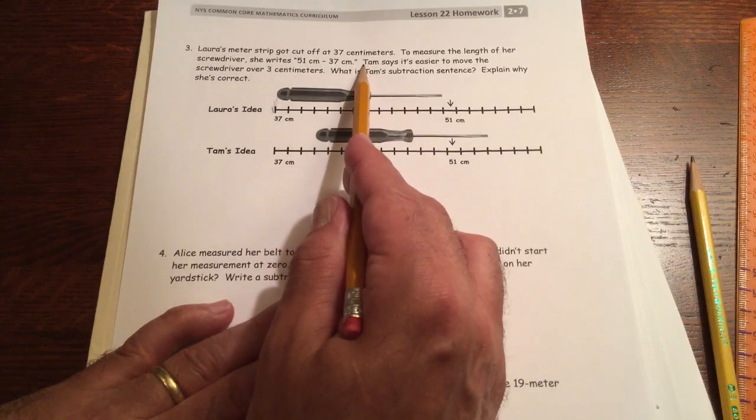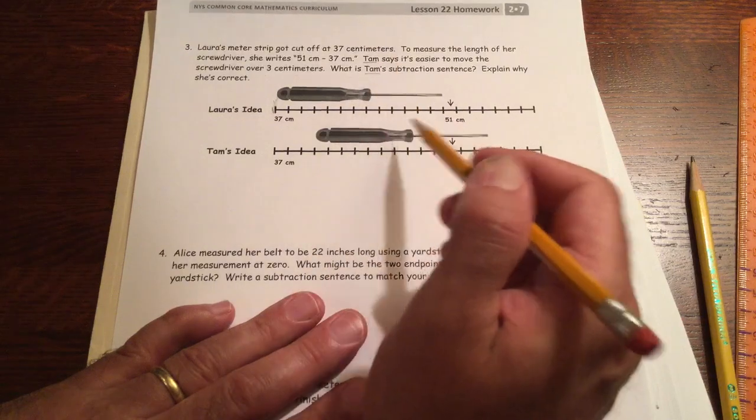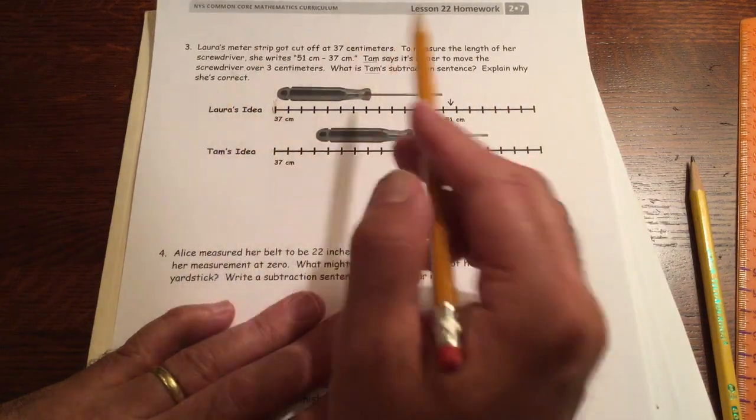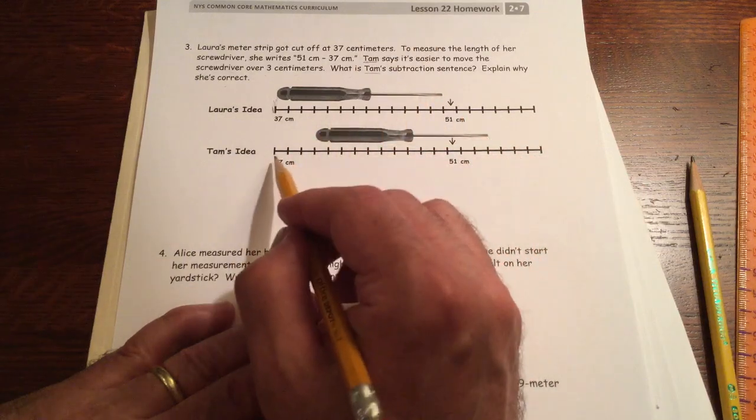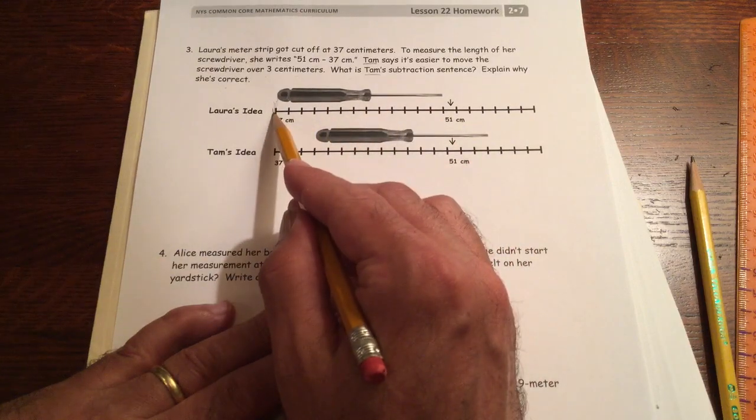What is, oh sorry, Tam, that's an A, Tam. What is Tam's subtraction sentence? Explain why she's correct.